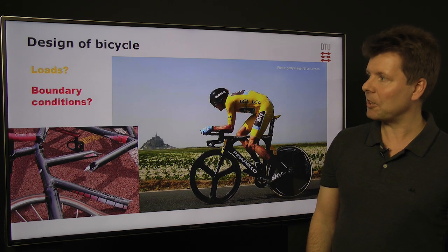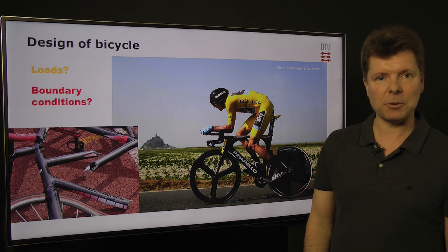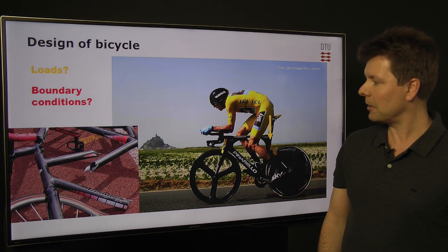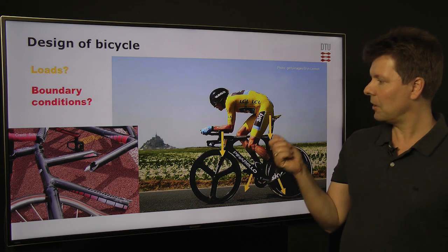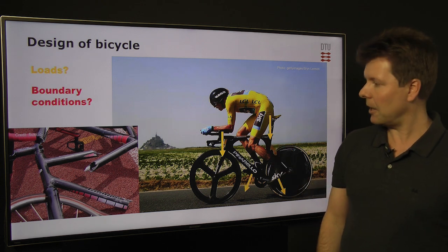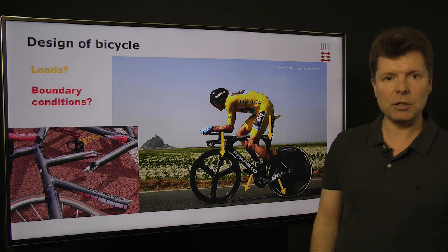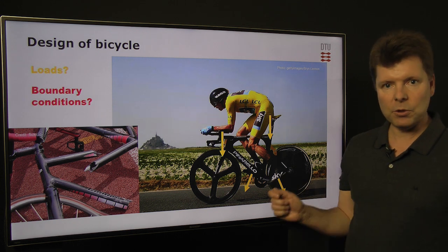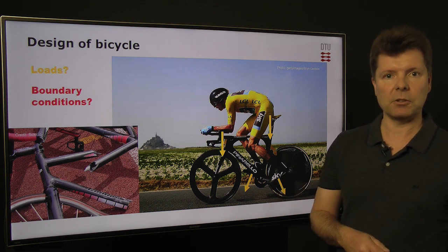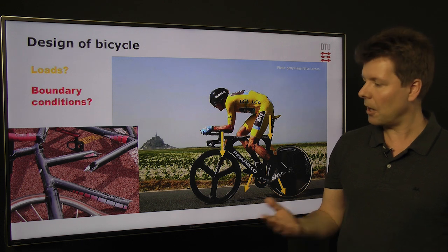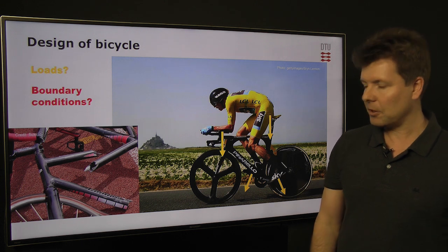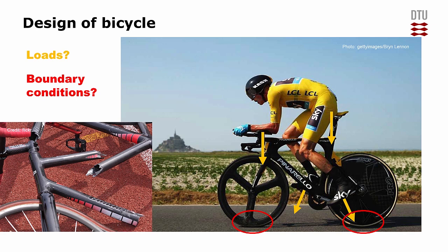What about a bicycle? What are the loads? The load comes from the rider on the bicycle — their weight on the saddle and the handlebars, and the forces from their feet onto the pedals. And what are the boundary conditions? It's where the tires are connected to the road.